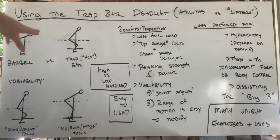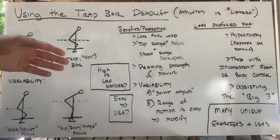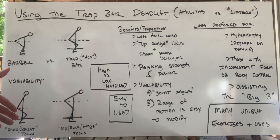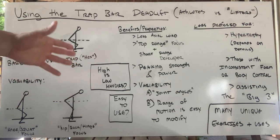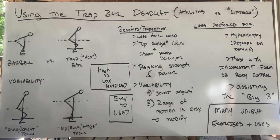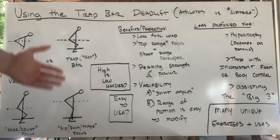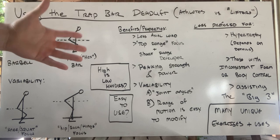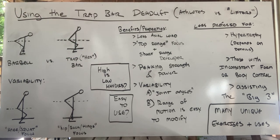A trap bar deadlift set up right is essentially a half squat. You can use it to overload those angles and get strong and explosive in the areas you need for sprinting, running, jumping, tackling, and wrestling — without as much stress or risk for the athlete, especially because you're not competing in that lift. You're using that lift to make you better on the field or on the mat.